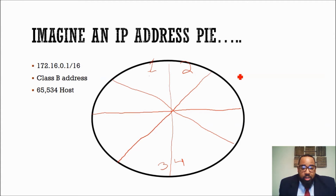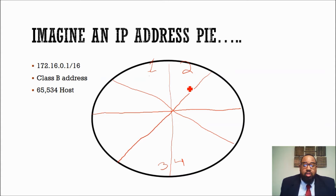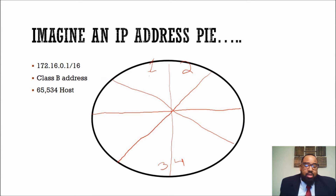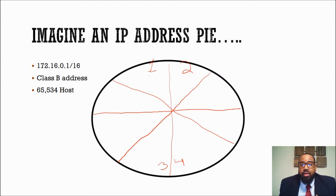What we're doing with this pie is taking each piece and giving it to a company — let's say Comcast Cable, AT&T, or Sprint. Each slice of this pie I could distribute out to, let's say, Walmart or Google. I give them a block of IP addresses, and what they do is subnet it down even more to limit broadcast domains and also to provide security for the different networks within Google or Walmart.